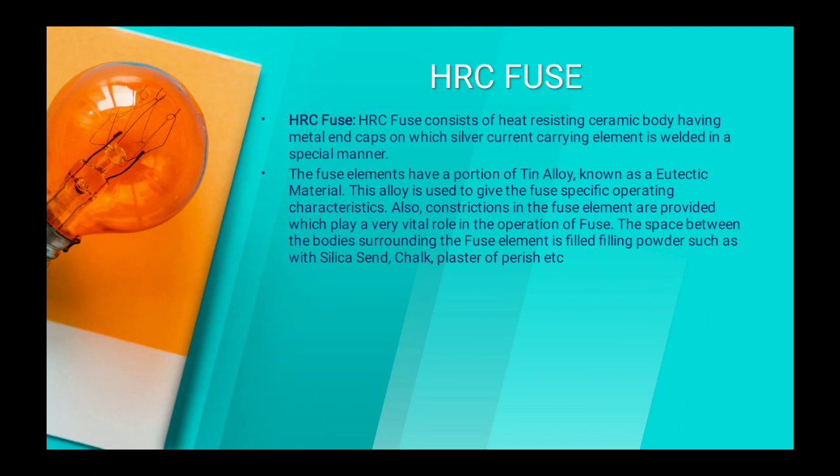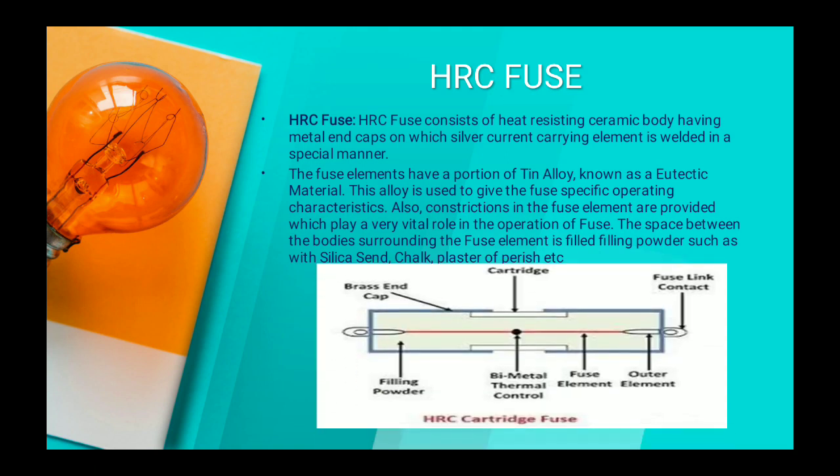Not only tin alloy but silver is also used in HRC fuse. The filling powder like chalk and silica sand are used as arc quenching medium and can absorb heat when the fuse melts or is heated. You can see an image of HRC fuse — the HRC cartridge fuse. The outer part is the end cap, and in the inner part there is filling powder, bi-metallic thermal control, fuse element made by silver, fuse link contacts, outer elements, and the cartridge. These are the various parts of HRC fuse.